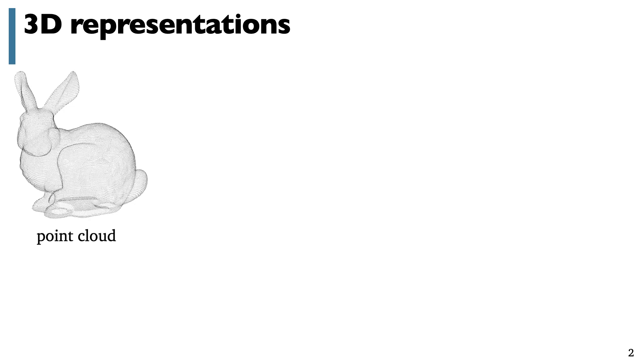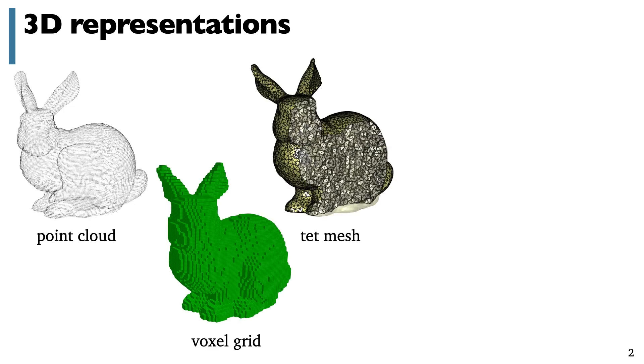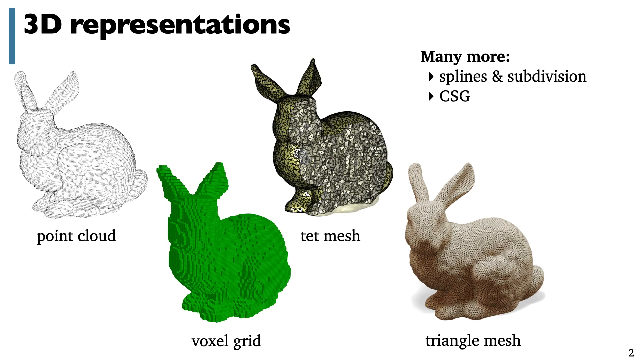Computing with 3D data is all about finding the right representation. From point clouds to voxel grids, tet meshes and triangle meshes, to splines, CSG trees and implicits, and more, there are many different representations with various strengths and weaknesses.